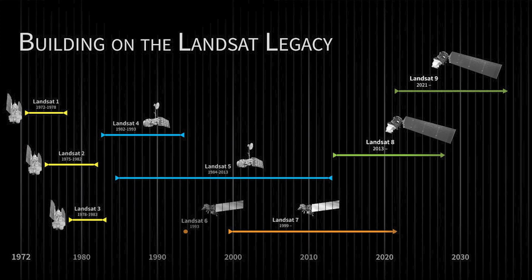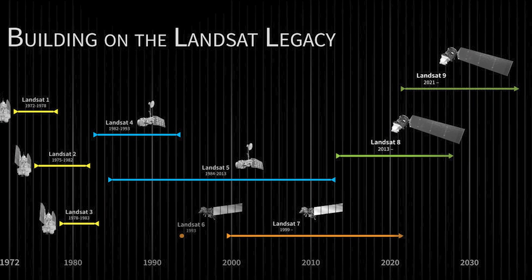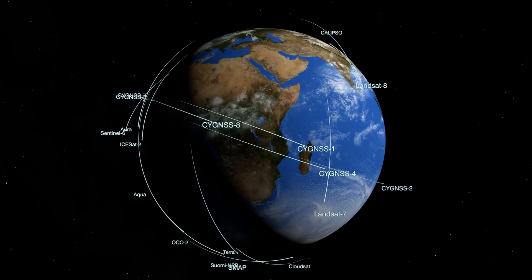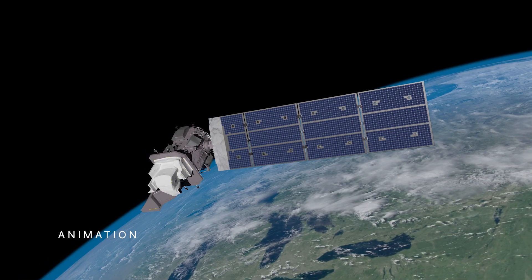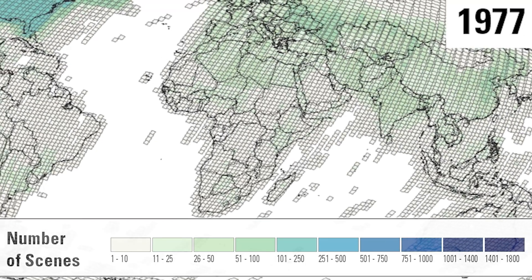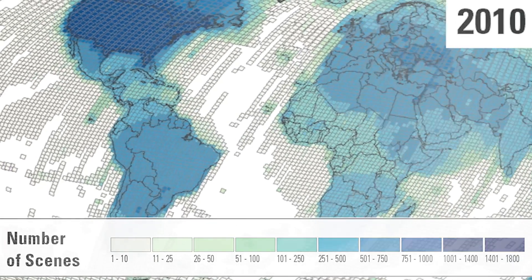Landsat 9 is the most recent in the Landsat series of remote sensing satellites, which provide global coverage of landscape changes on our home planet. The Landsat program, a joint effort between NASA and the USGS, recently marked 50 years of continuous service observing Earth from space.